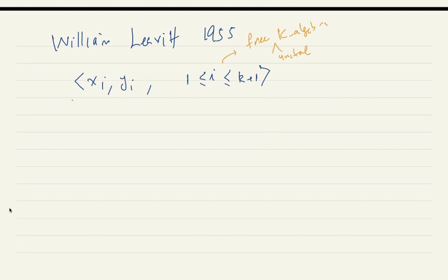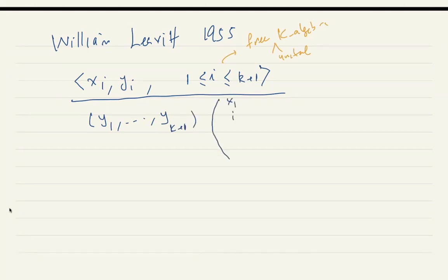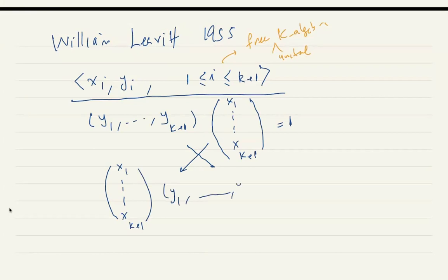He then divides this with two relations. He arranges the y-symbols in a row and the x-symbols in a column, and if you multiply these two matrices, he forces the product to be one. Then he swaps the positions and does the same thing, getting a (k+1)×(k+1) matrix equal to the identity. Let me call this algebra L(1,n).